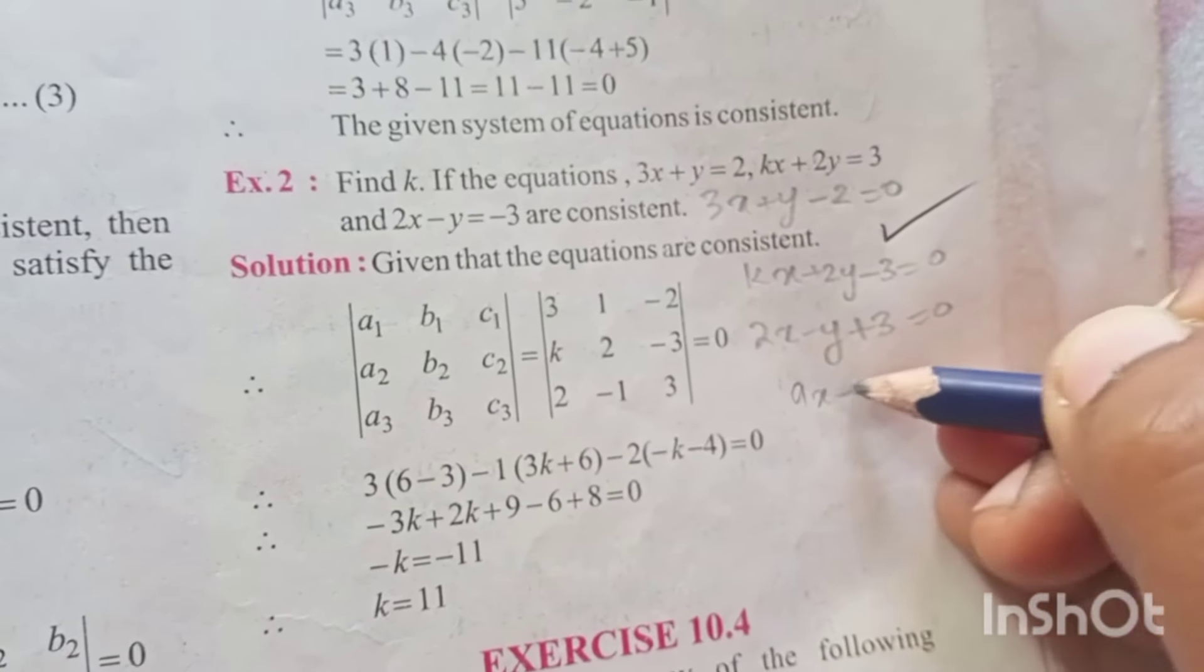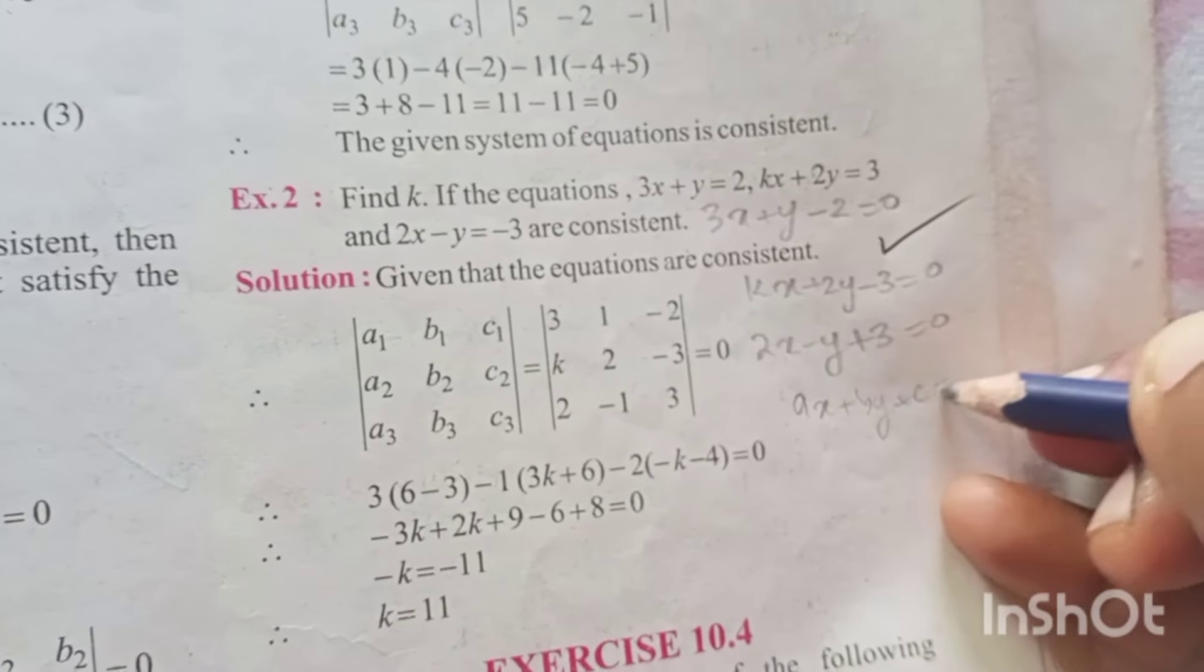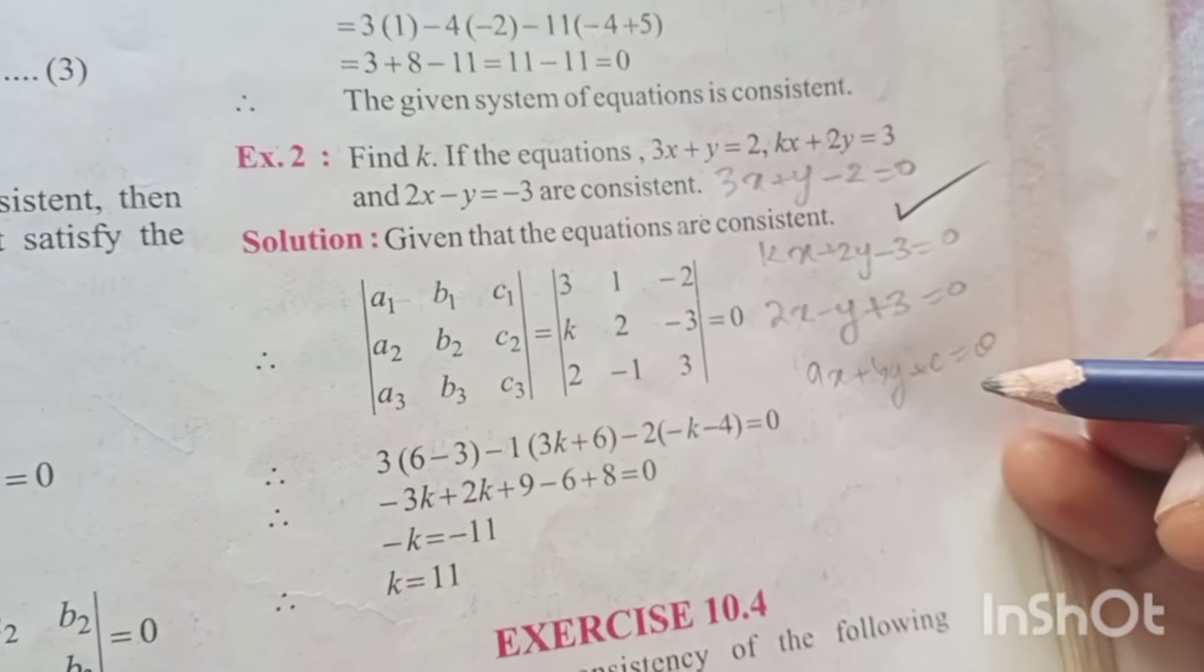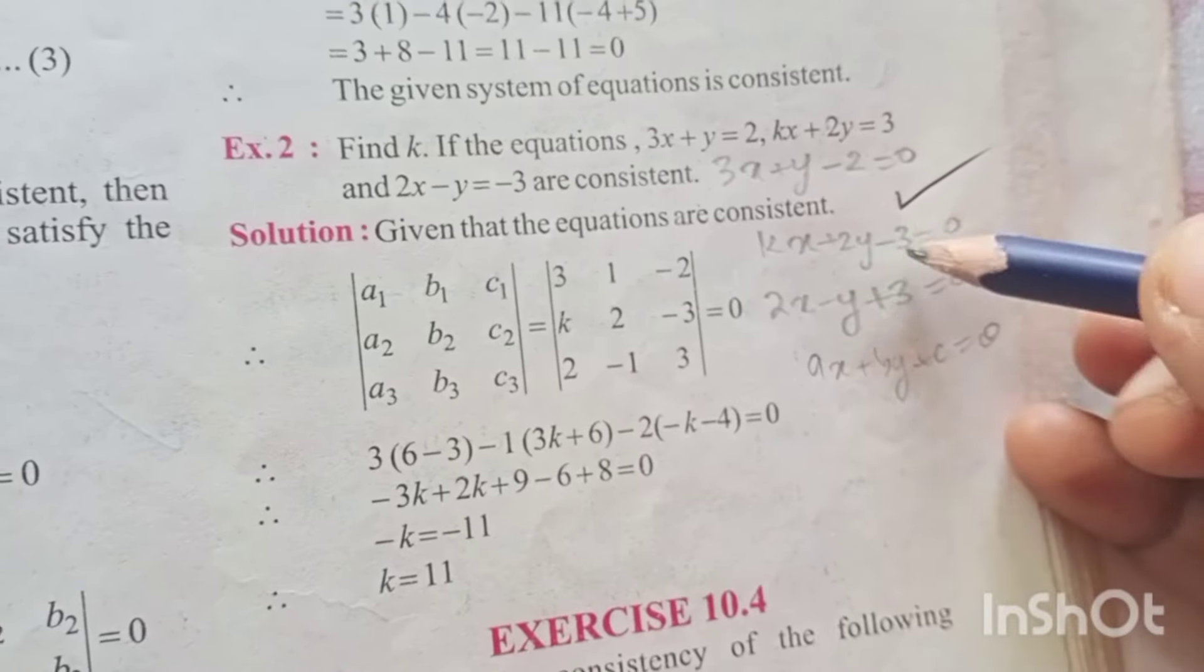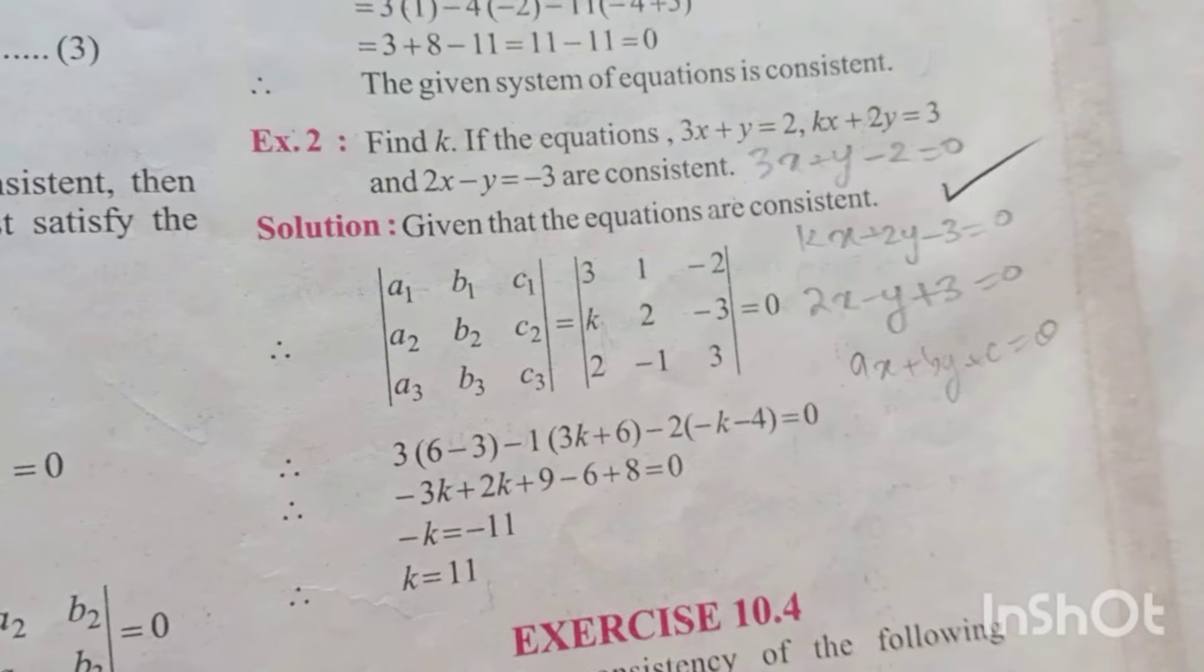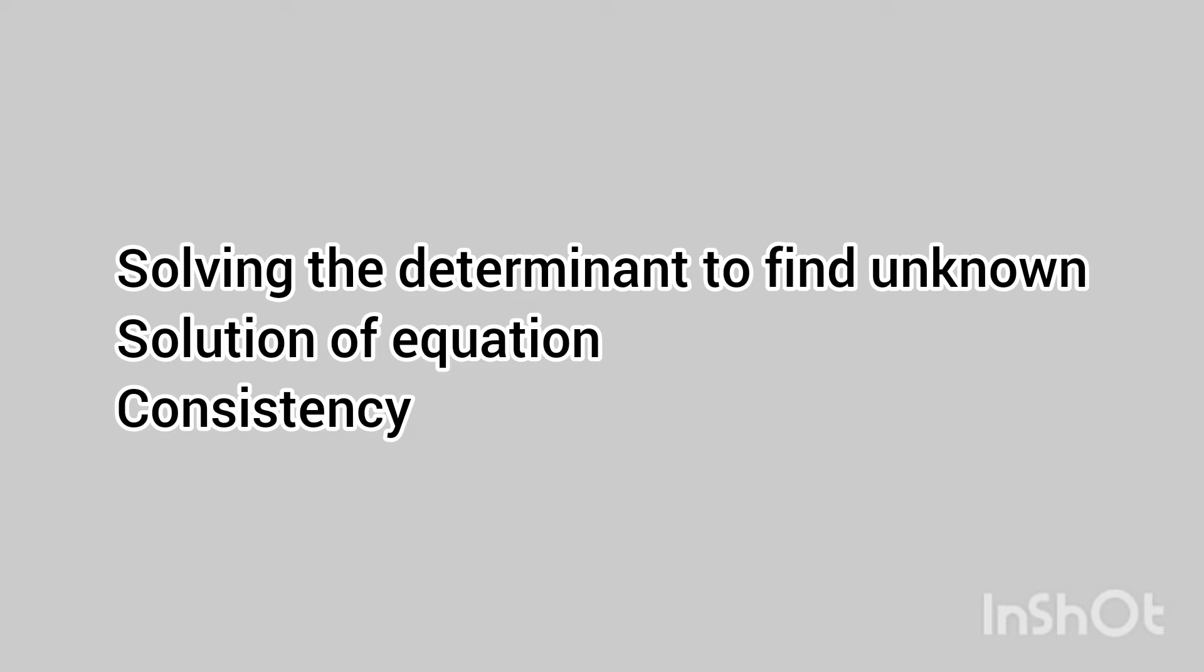Now from this equation you have to substitute a, b and c and then solve the determinant. So 3, 1, minus 2, k, 2, minus 3, 2, minus 1, 3. After solving you get k equal to 11. So from determinant you can expect to solve determinants to find unknown or to find solution of equations or consistency questions.